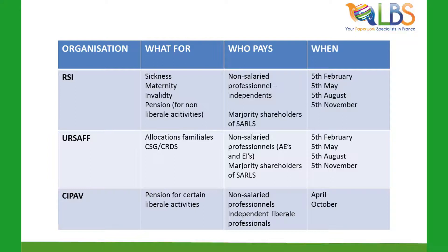Your RSI schedule is broken down into four payments. For the URSSAF, they take off allocations familiales — that's anything to do with child benefits; you pay into it even if you don't have children — plus CSG and CRDS, which is about the national debt. Non-salaried professionals pay the URSSAF, and the deadlines are very similar to the RSI: around the 5th of every trimester. For URSSAF you will receive a yearly breakdown and they remind you as well. You can set up a direct debit for URSSAF so it comes directly out of your bank account; a direct debit is not currently possible for the RSI.